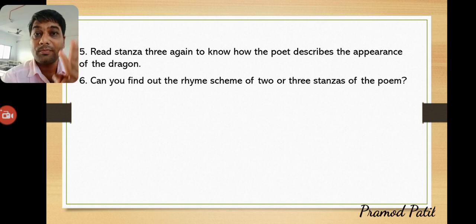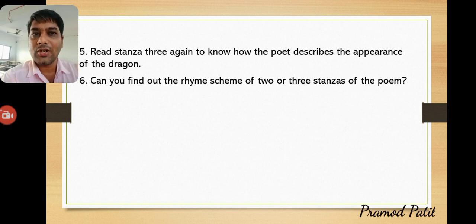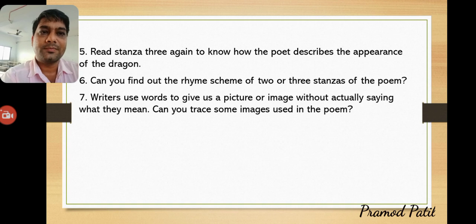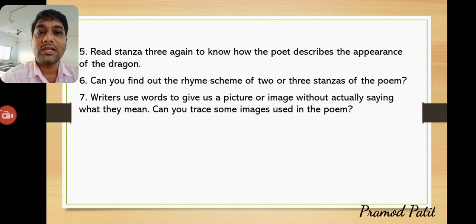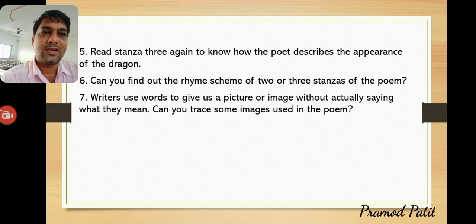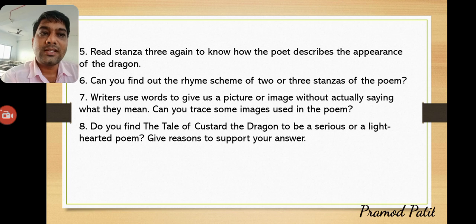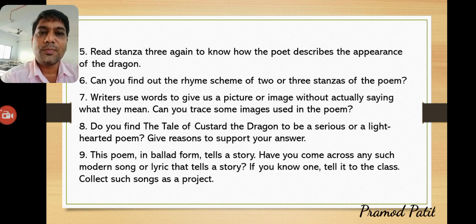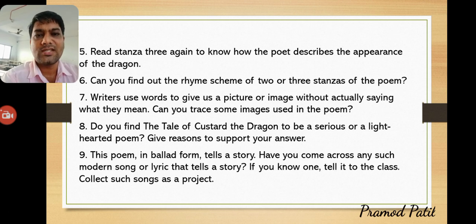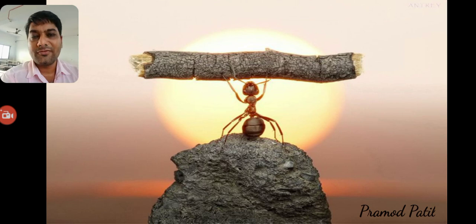Poetic devices used in the poem include simile — for example, 'clashed his tail like iron in the dungeon.' Can you find other figures of speech like metaphor? Writers use words to create images without directly saying what they mean — can you trace the imagery used in this poem? Is 'The Tale of Custard the Dragon' a serious or light-hearted poem? Give reasons to support your answer.